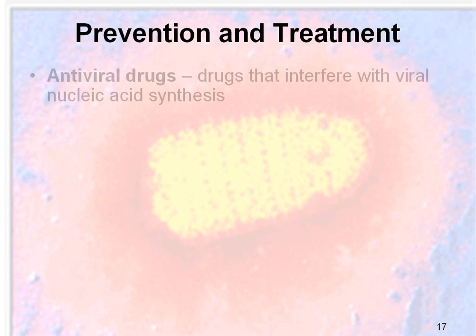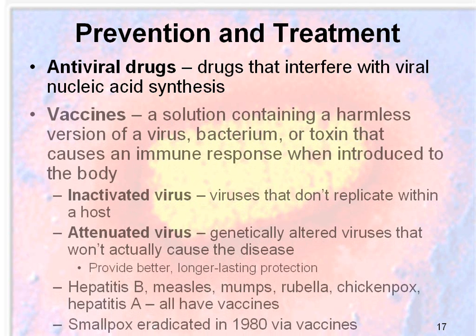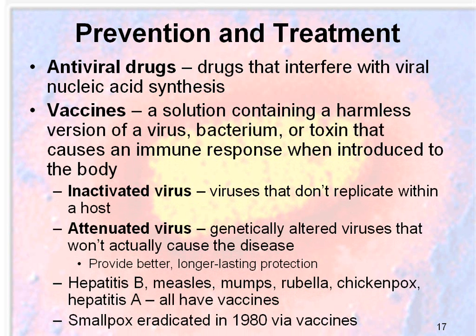Prevention and treatment: there are antiviral drugs that interfere with viral nucleic acid synthesis, hopefully preventing them from synthesizing more of themselves. And of course, vaccines — which are a solution containing a harmless version of the virus, bacterium, or toxin, that causes the immune response when introduced to the body. There are two types of vaccines: the inactivated virus vaccine and the attenuated virus vaccine. Inactivated virus vaccines have viruses that don't replicate within the host. Attenuated viruses are genetically altered viruses that won't cause the disease but provide better long-lasting protection.